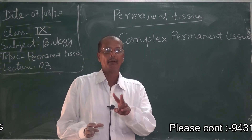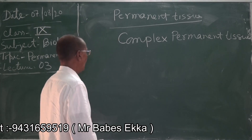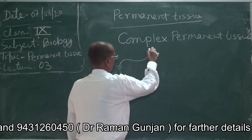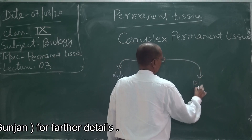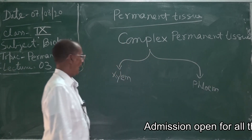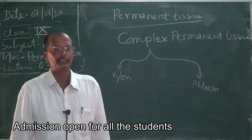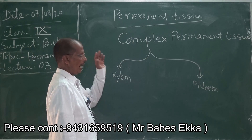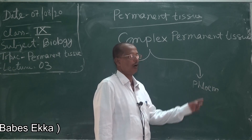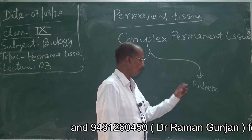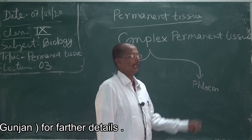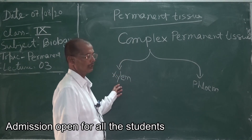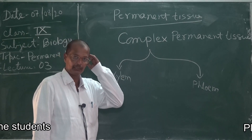Two main kinds of complex permanent tissue are there. The first one is xylem and the second one is phloem. From the very beginning you know that xylem is meant for the upward transport of water from root to leaves, and phloem is meant for the transport of food from leaf to other parts of the plant. Phloem transport takes place in both directions — upward and downward — while xylem transport of water takes place only in one direction, from root to leaves.